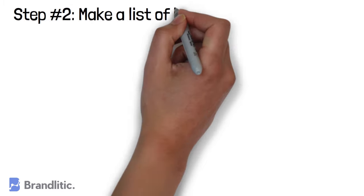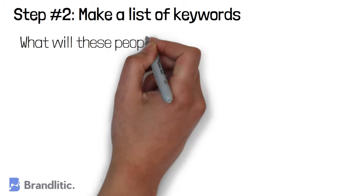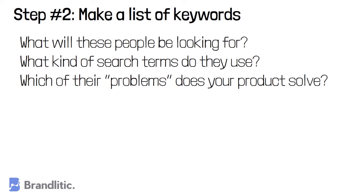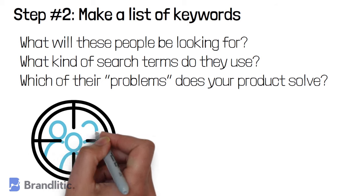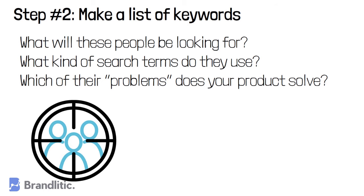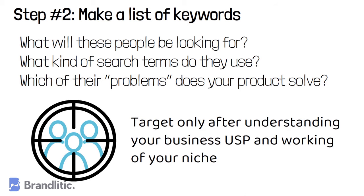Step 2: Make a list of keywords. With your mission in mind, try to get into the heads of your desired audience. What will these people be looking for? What kind of search terms could they be using while looking for your product or service? Which of their problems does your product solve? Write down as many answers as possible. If your mission is clear, you'll have a clear image of your niche and unique selling points — the things that set your business apart. You'll then have a list of search terms you want to be found for.